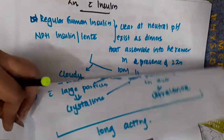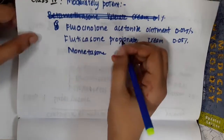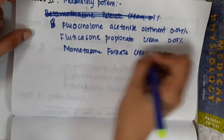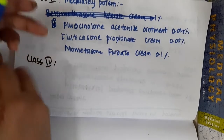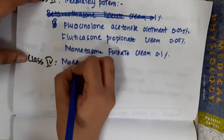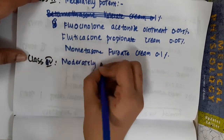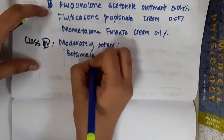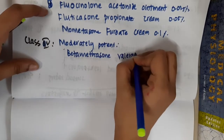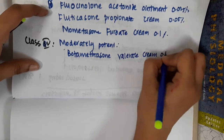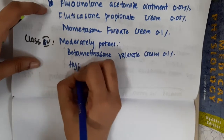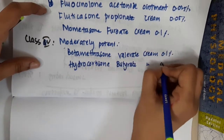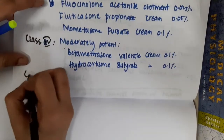Then we have class 5, which is also called moderately potent. This includes betamethasone valerate cream at 0.1% and hydrocortisone butyrate cream at 0.1%.